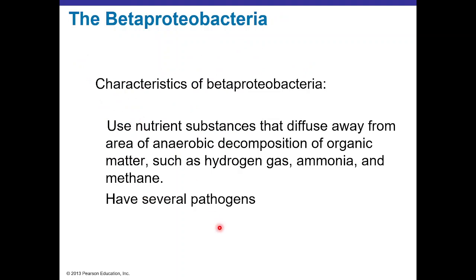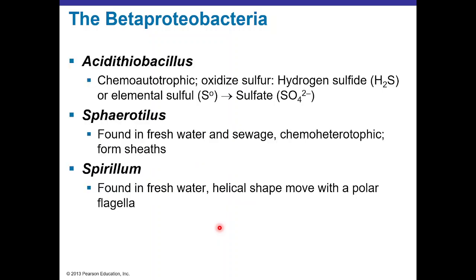Beta Proteobacteria use nutrients that diffuse away from decaying organic matter, such as hydrogen gas, ammonia, and methane, and include several pathogenic bacteria. Acidithiobacillus can oxidize sulfur compounds like hydrogen sulfide or elemental sulfur into sulfate. Sphaerotilus lives in fresh water and sewage, is chemoheterotrophic, and forms sheets for protection and nutrient accumulation. Aquaspirillum has a helical shape with one polar flagellum and lives in fresh water.